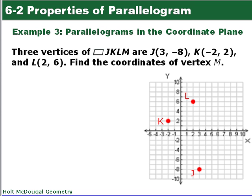So now, we're looking at the coordinate plane. We have three vertices of parallelogram JKLM. We want to find the coordinates for the fourth vertex. So the first thing you want to do is plot the points. You've got J here at 3, negative 8. K is at negative 2, 2. And L is at 2, 6.